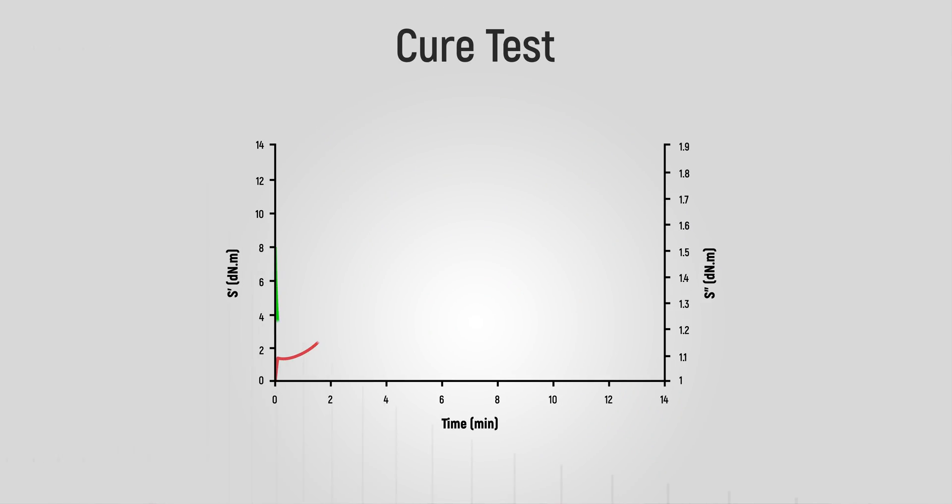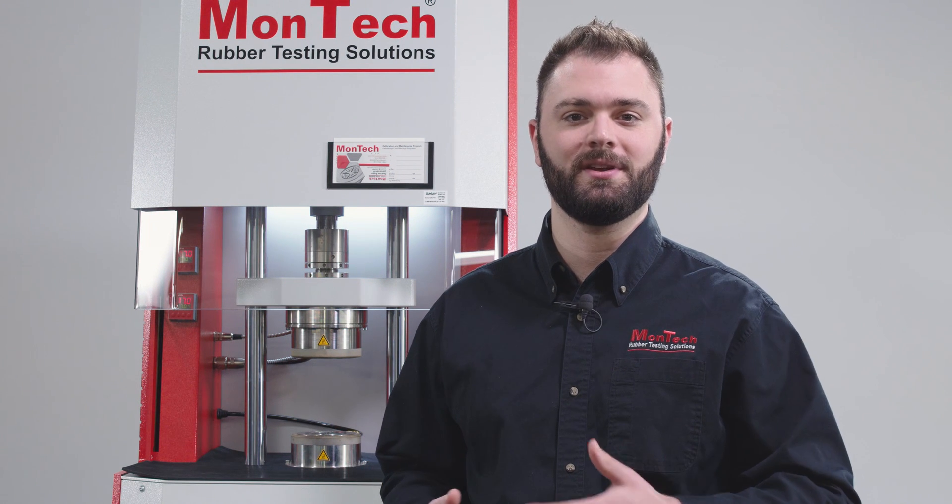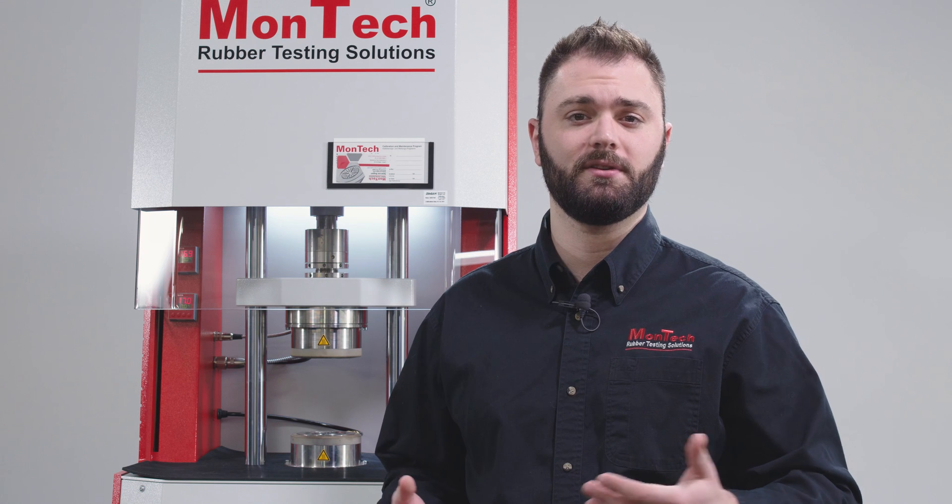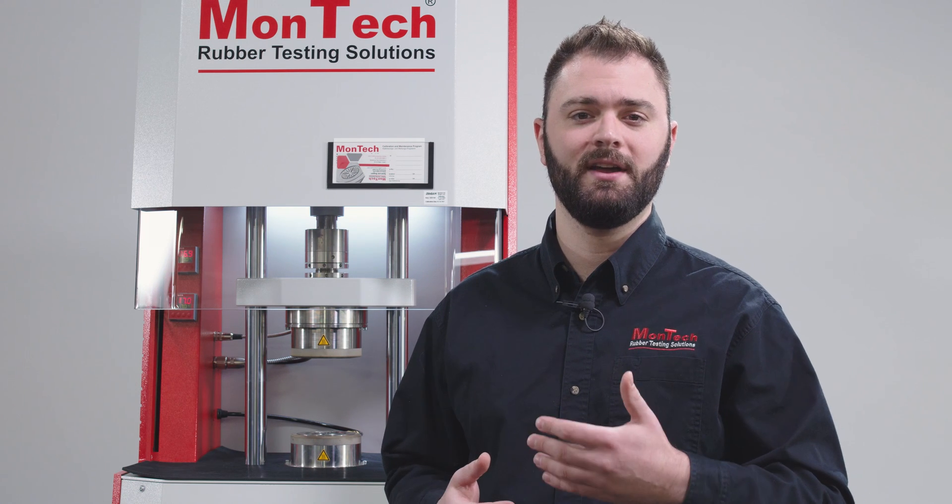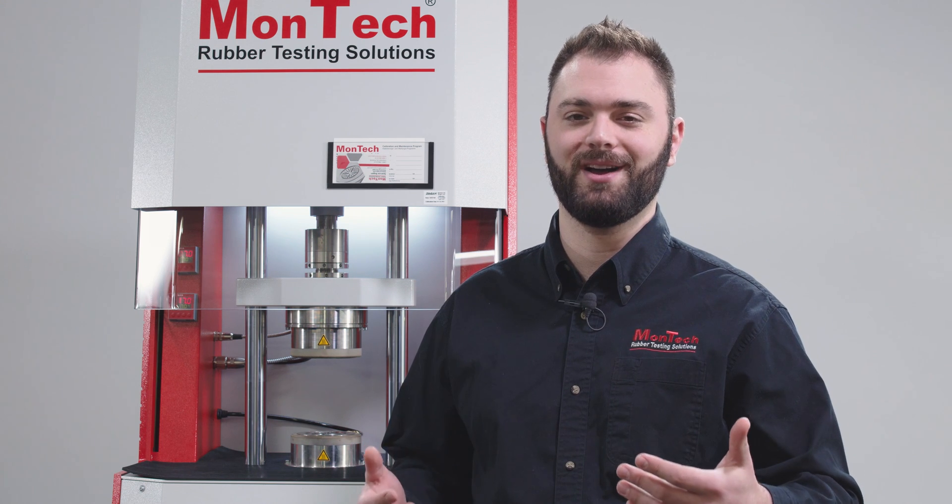By examining the data from the test results, it can be determined when a material begins curing, or its scorch time, as well as how long it takes the material to fully cure at the temperature used for the test, or its cure time. Predictions about the material's cured durometer hardness can be made from S' max and can be useful in determining appropriate filler loading. TC times indicate the rate of cross-link formation at various stages of the reaction and can be useful in determining appropriate quantities of chemicals used to speed, slow, or otherwise control the curing process.